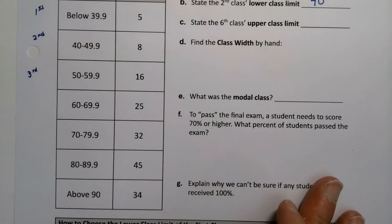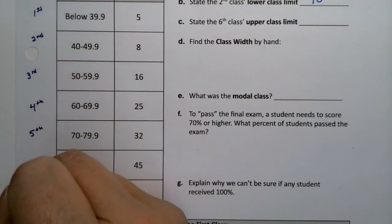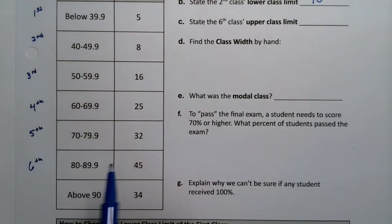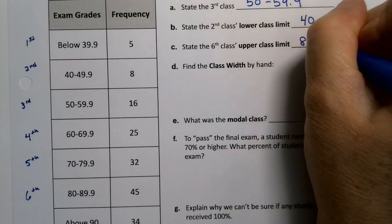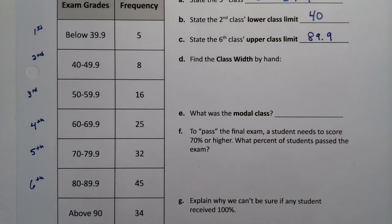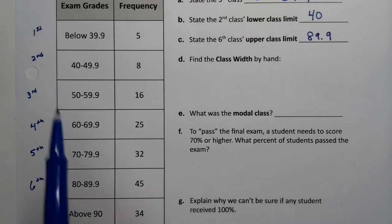Now the sixth class's upper class limit. Let's see here. Here's the fourth. Here's the fifth. Here's the sixth class. So the sixth class's upper class limit is 89 or 89.9 or 89.99999. That number. We'll generally write whatever they write here. So we would say 89.9. But in your head, realize there could be more decimal places or less decimal places based on how they chose to round this time.